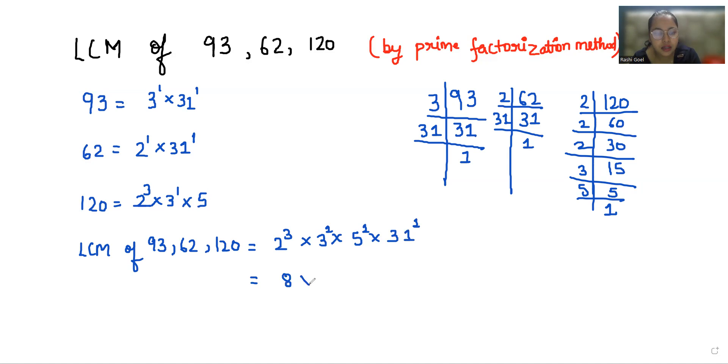Now 2 cube is 8 times 3 times 5 times 31. Now 8 times 3 times 5 is 120 times 31 which equals 3720.